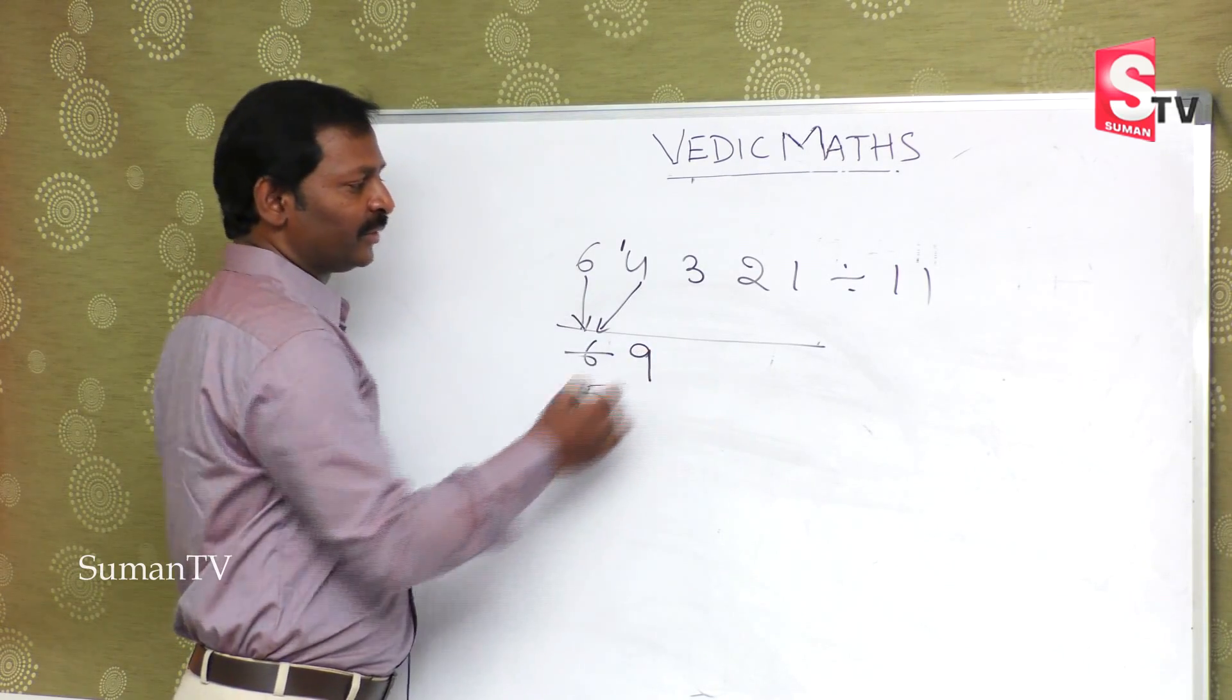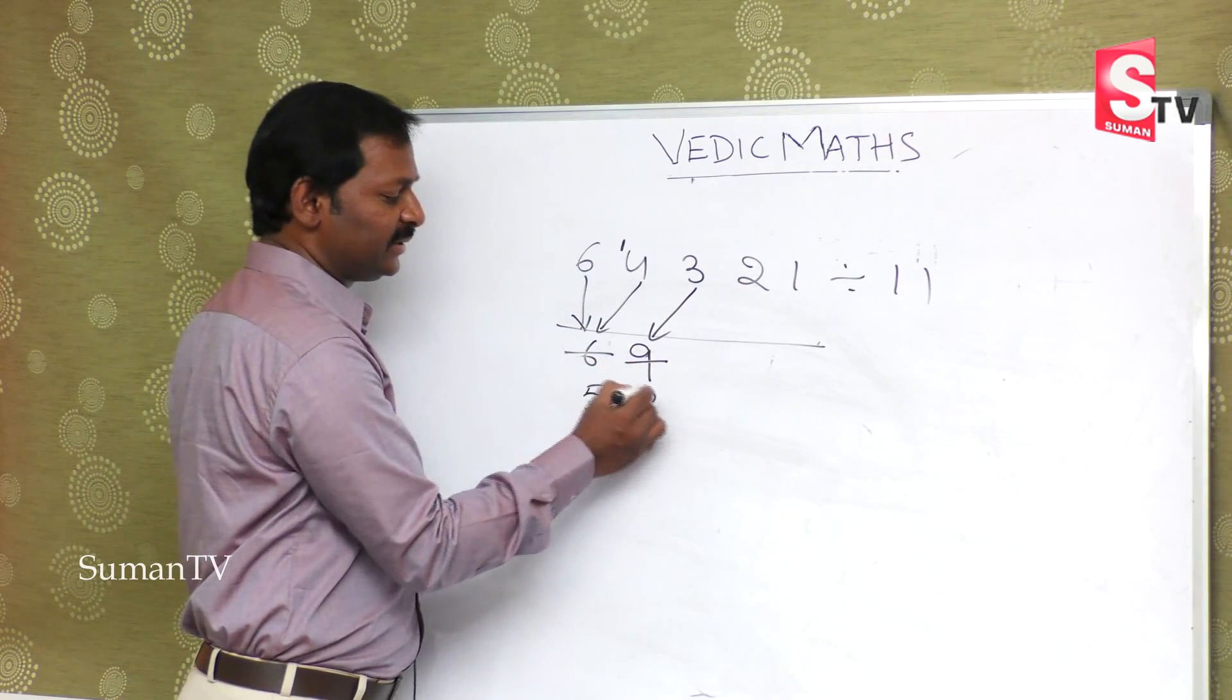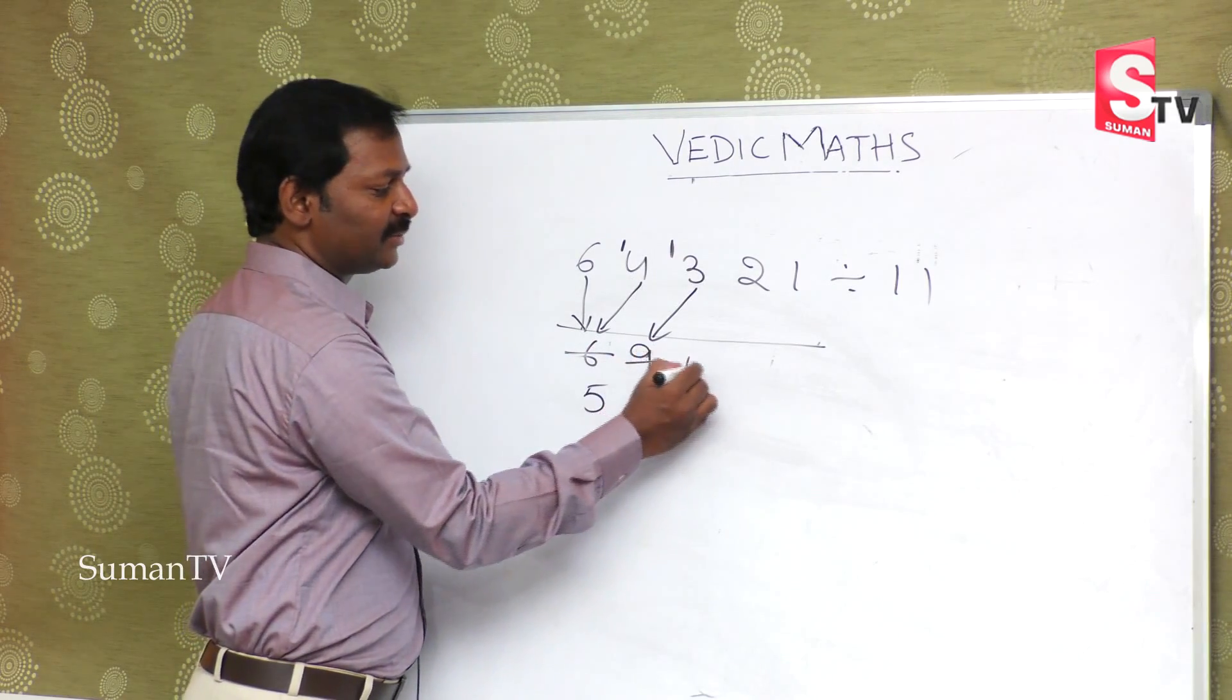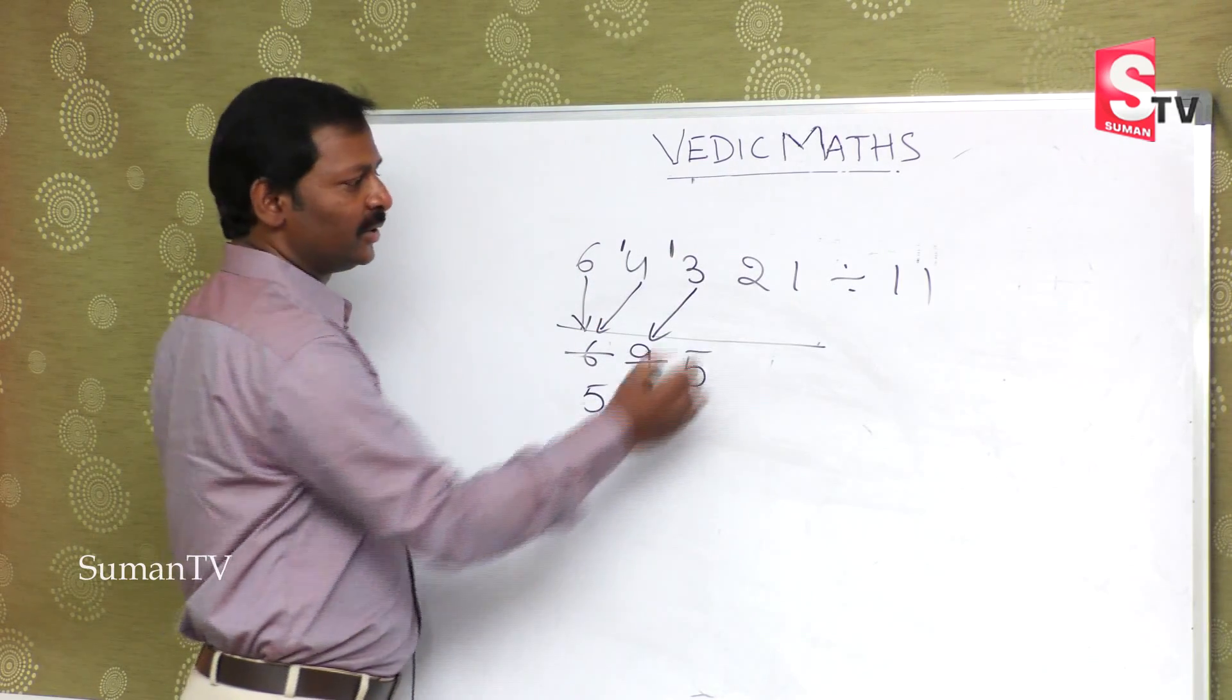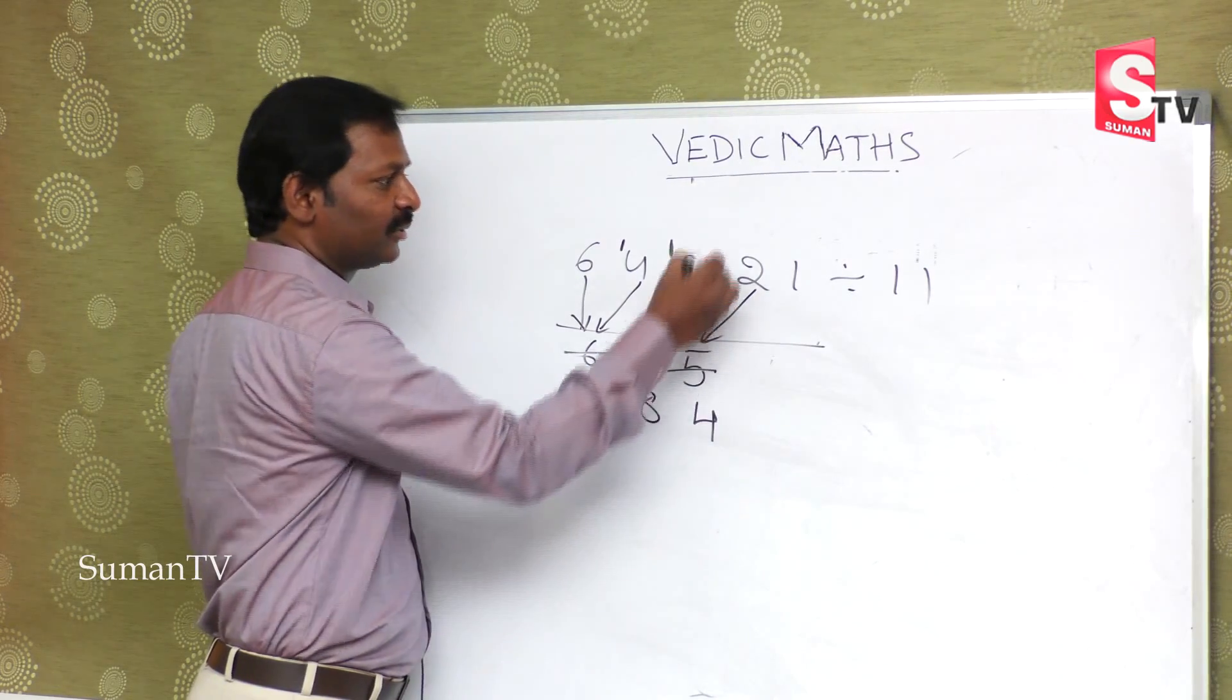3 minus 8 is not possible, so we decrease this to 2. One stays back here, so 13 minus 8 is 5. Now 2 minus 5 is not possible, this becomes 1, this is 12 minus 5 equals 7.